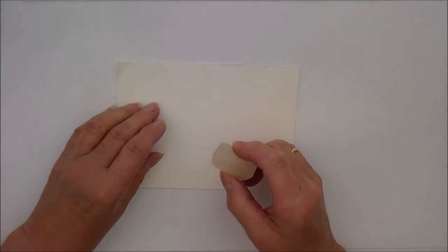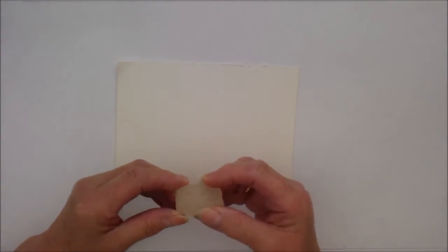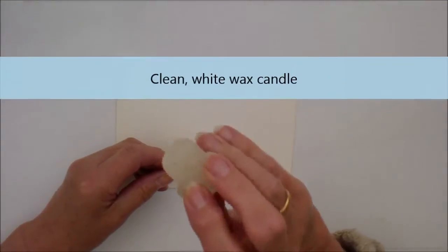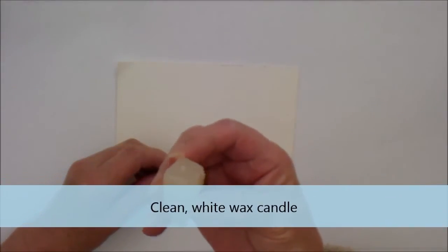Let's look at using a resist in your painting. What is a resist, I hear you ask? Well, it's putting something onto your surface that stops the paint from adhering to the paper. And that something is, in this case, a very ordinary piece of wax candle.